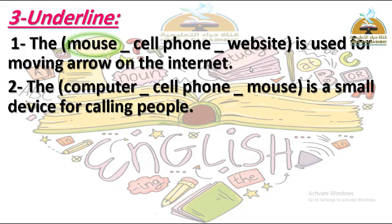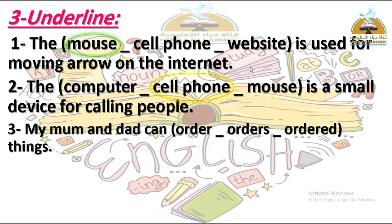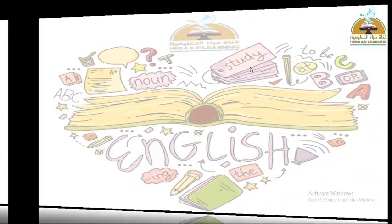Number two: The computer / cell phone / mouse is a small device for calling people. جهاز صغير للاتصال بالناس - الإجابة: cell phone. Number three: My mom and dad can order / orders / ordered things. بعد 'can' لازم verb infinitive بدون إضافات، يبقى الإجابة: order.